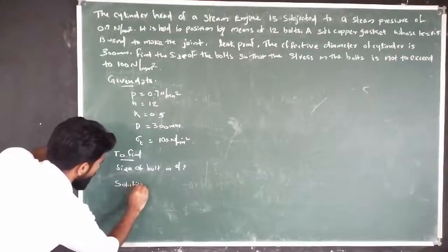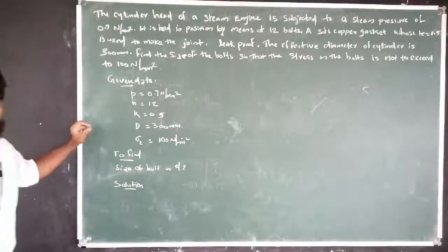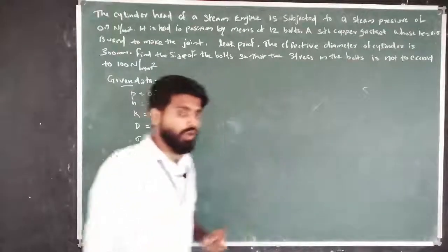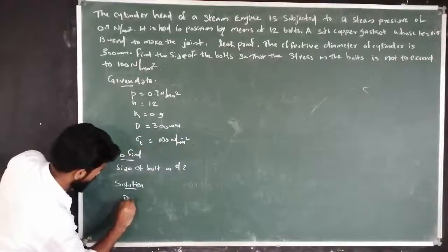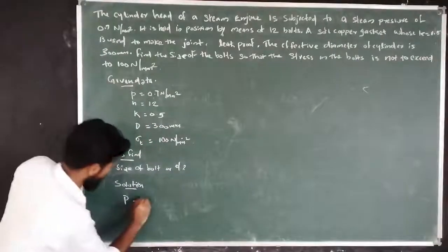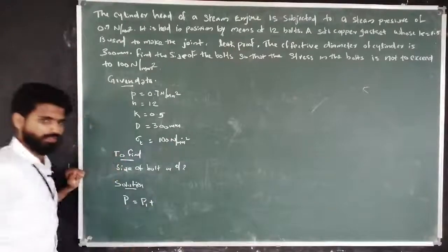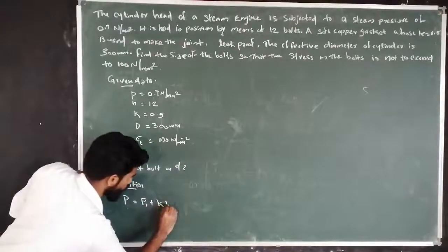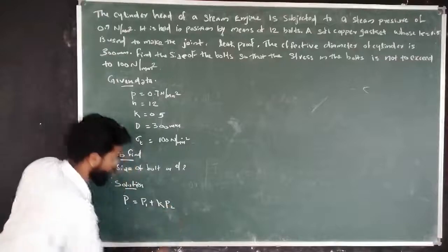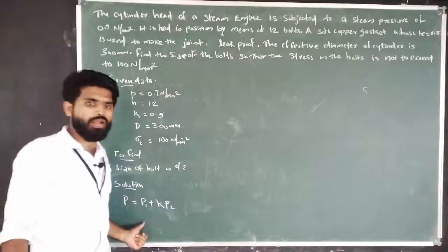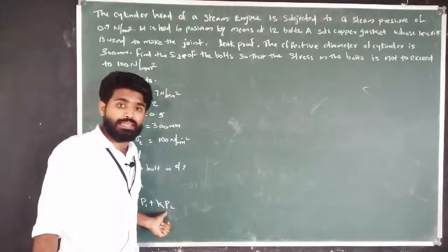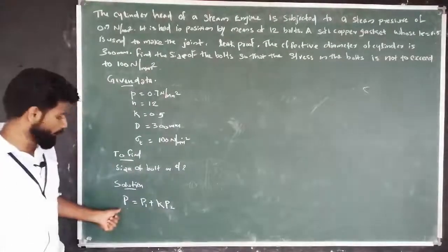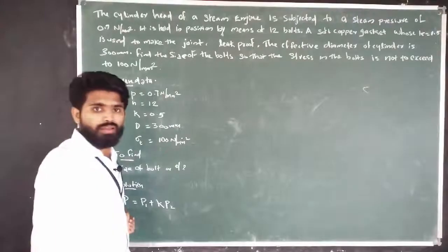In the case of combined load — third condition — we use the axial load equation: P = P1 + K × P2, where P1 is the initial load, P2 is the external load, K is the stiffness constant, and P is the total axial load.